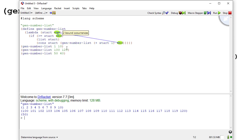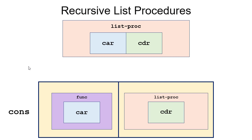Our next function is going to triple every element in the list, which has a slightly different structure because now we're passing a list as a parameter. The general pattern when we want to modify every element in a list is: we cons the result of applying some function to the car of the list onto a recursive call of the same procedure on the cdr of the list. Our base case is when we receive an empty list — we just return that empty list.